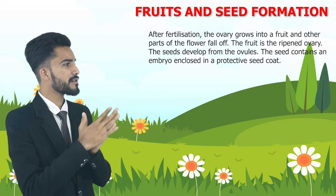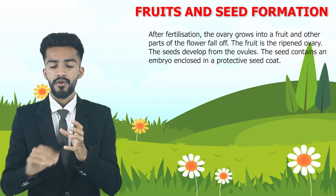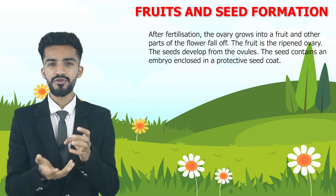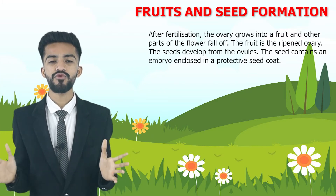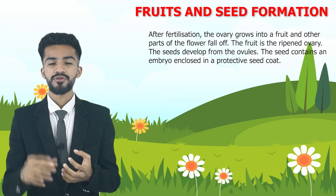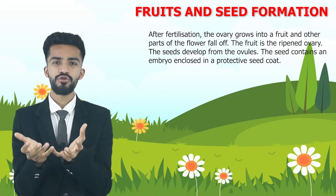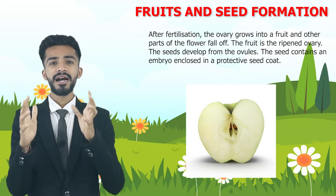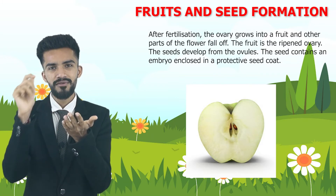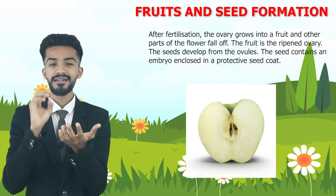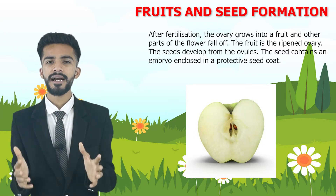And the seed contains an embryo enclosed in a protective seed coat. Inside the seed there is an embryo with a protective coating around it. We know that if you put a seed back into the ground, a new plant will grow from it, so there must be something inside it. Yes — the seed contains the embryo with a protective coat around the seed. Here you can see an apple fruit is shown; inside the apple you have seen seeds. If you take out that seed and remove its covering, what is visible inside is the embryo of the seed. All seeds have a covering on the outside.